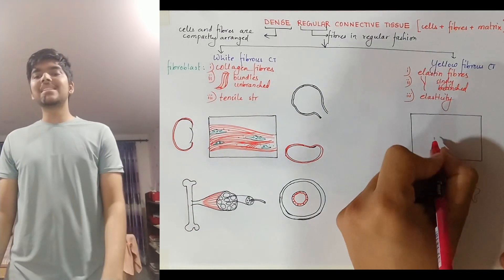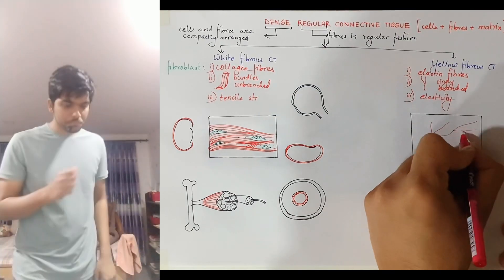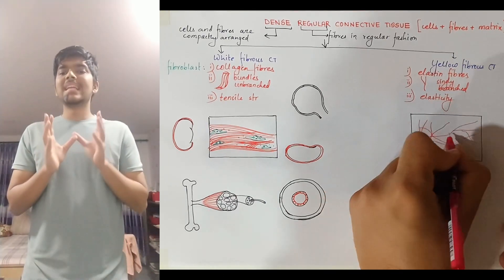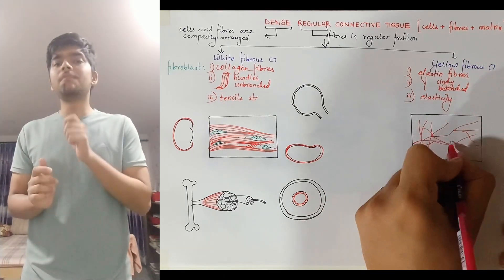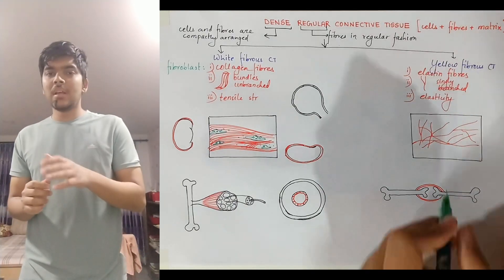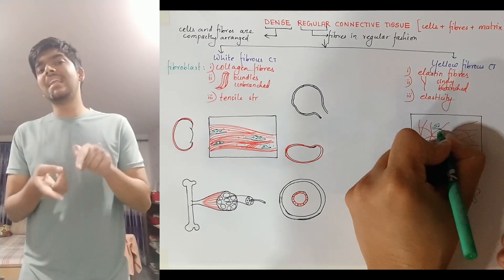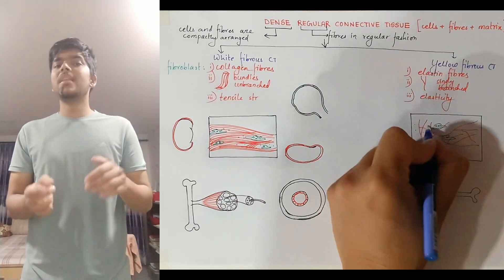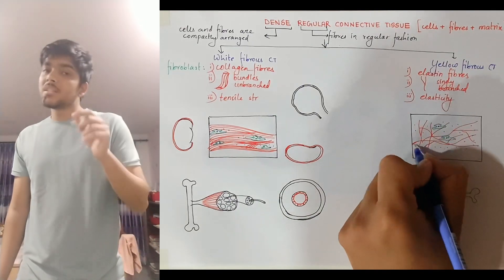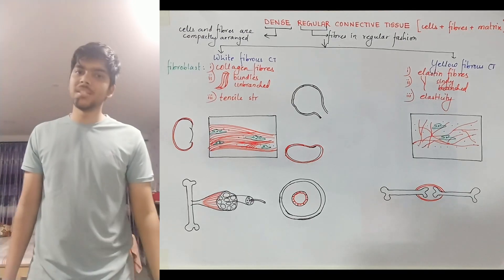In yellow fibrous connective tissue, it consists of elastic fibers. These elastin fibers are found singly and are branched. There are few fibroblasts that secrete these elastin fibers. Elastin fibers make up the yellow fibrous connective tissue — yellow because the protein elastin is yellow in color — and it provides elasticity.